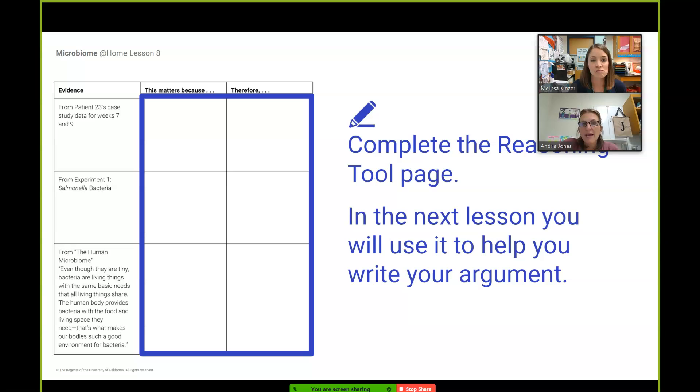For the rest of your activity today, we think this will probably take you anywhere from 15 to 30 minutes, no more than 30 minutes. We have given you two other crucial pieces of evidence. You are going to fill in the therefore first and then go back and tell why it matters for both the salmonella bacteria, which is the mice experiment, and then the other one is the human microbiome article.